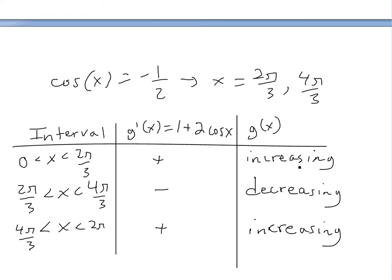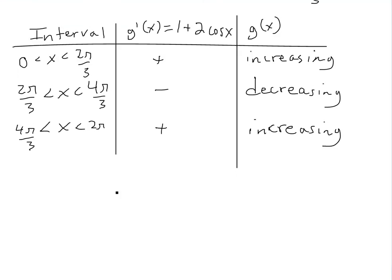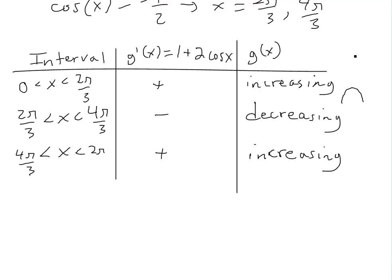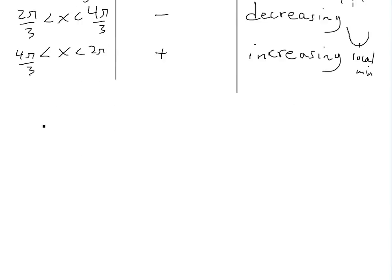Based on our first derivative test, we know this is going from positive to negative at two pi over three, so it's like increasing then decreasing — that means the x value of two pi over three is a local maximum. And at four pi over three, it's going from decreasing to increasing, so then this point is a local minimum. These are at the critical points.